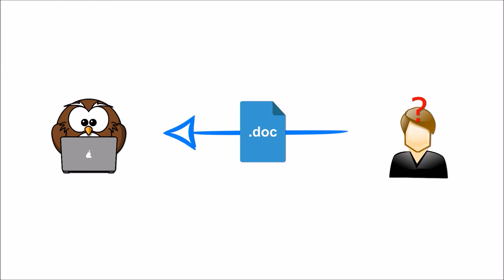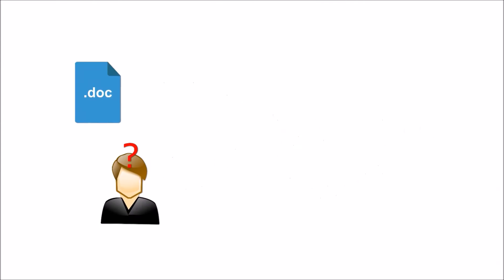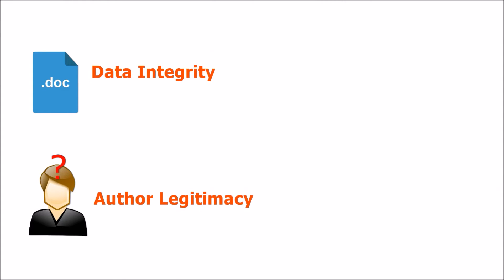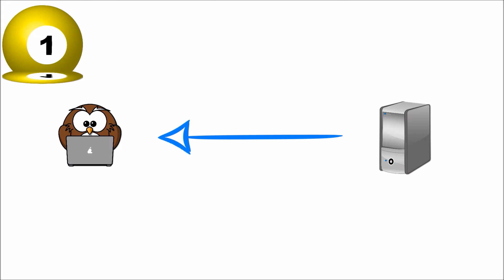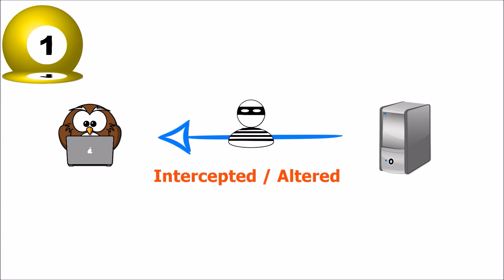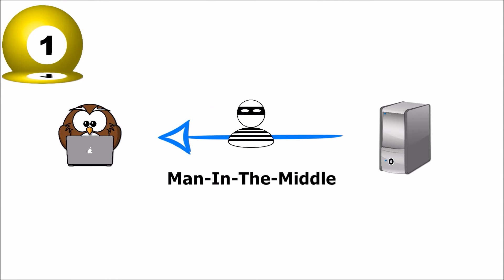Along with encrypting sensitive information, we also have to be certain of the data that we are receiving and also of the authors. This is important for two main reasons. The first reason is that the data can be intercepted and altered during transmission. This is commonly referred to as a man-in-the-middle attack.